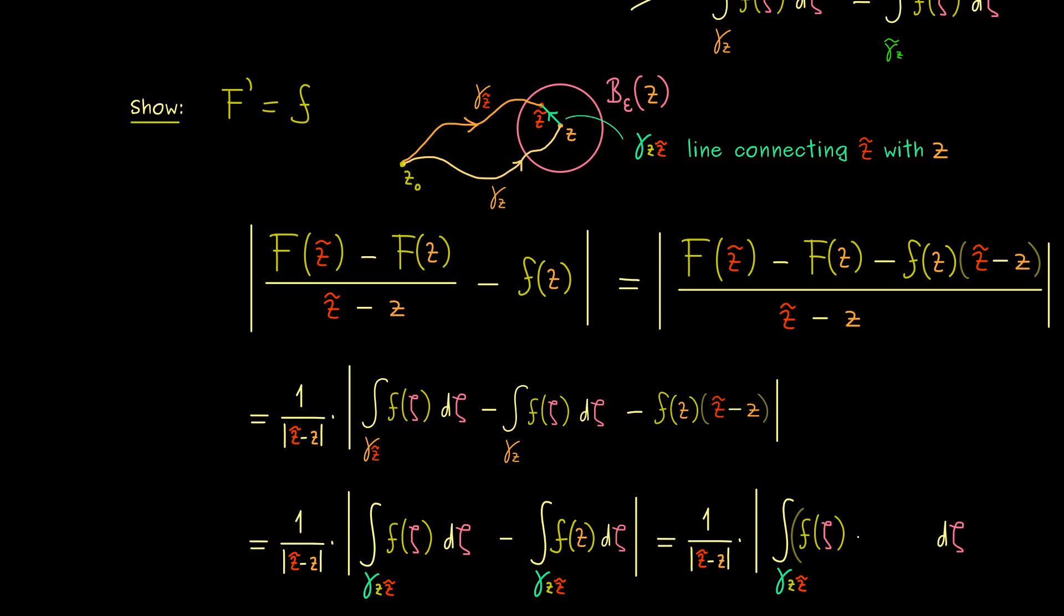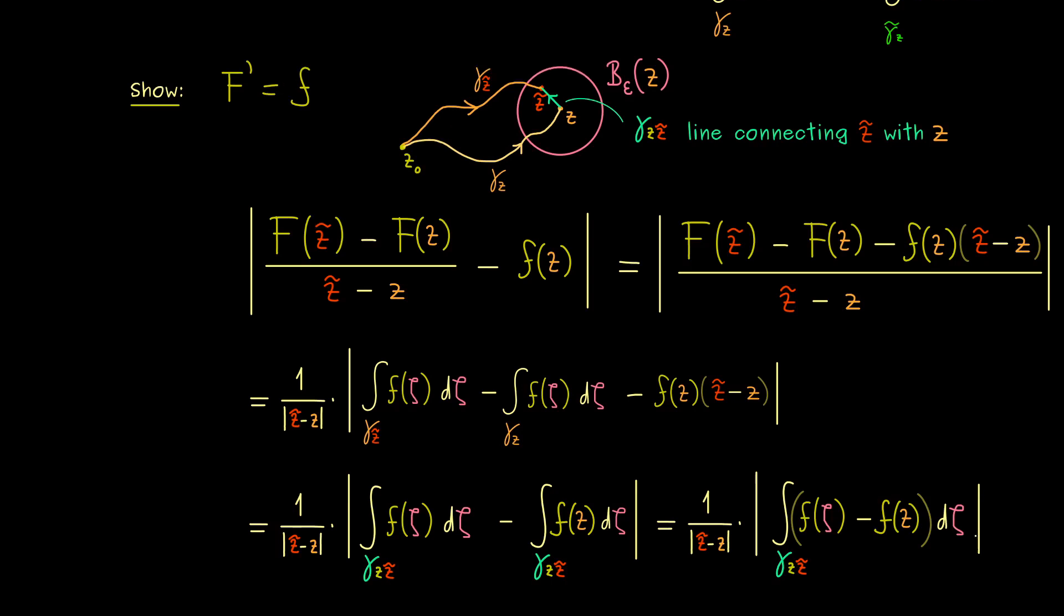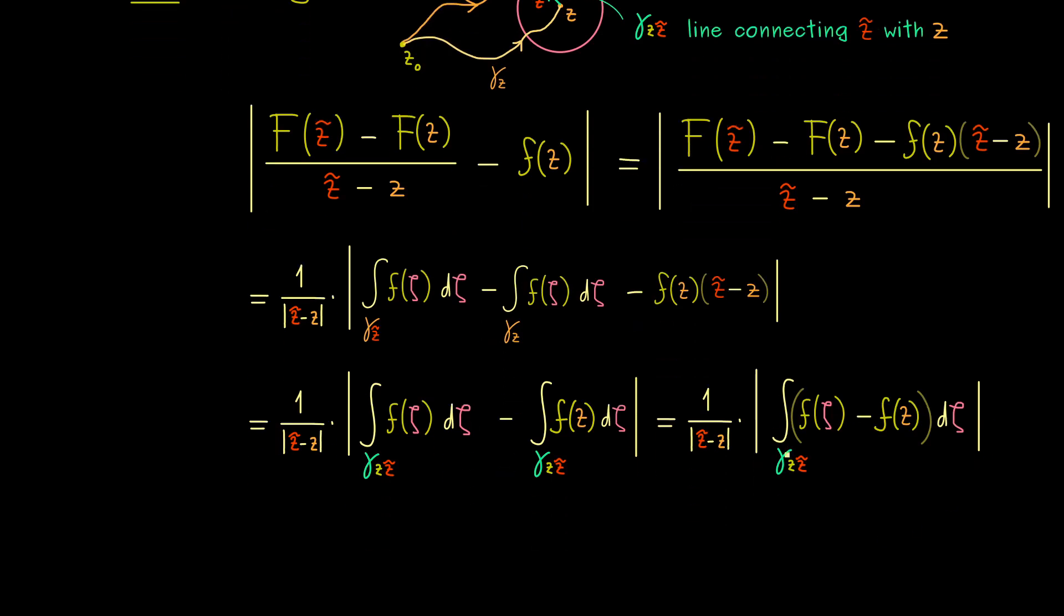Then in the next step we simply rewrite both integrals into a single one. And then you should see, finally we can use an estimate here. And in fact, this will be the estimate we have discussed in part 19. It tells us that the whole contour integral is bounded by the maximum of the function times the length of the curve. So more precisely, here we have the maximum of the two functions in the difference times the length of gamma_Z Z tilde. However, by the definition of this new curve here, we already know the length is just this difference here in the absolute value. In other words, this is the sole reason we choose this line, because now we can cancel here. On the other hand, for the maximum, instead of focusing on the line segment, we can also estimate it with the maximum in the epsilon ball. In some sense, it's just shorter to write down.